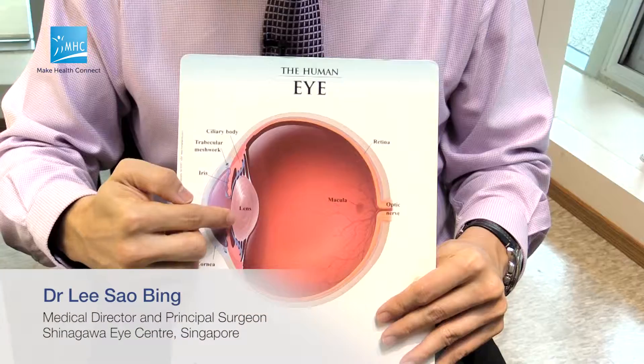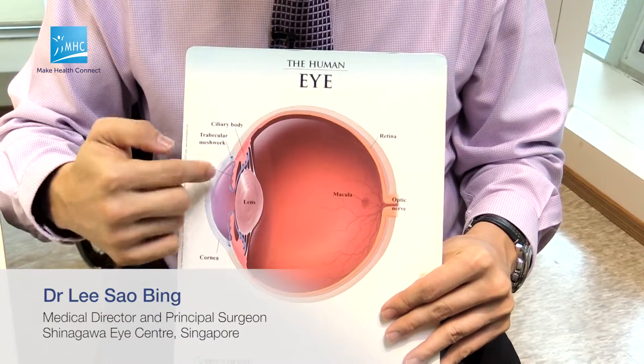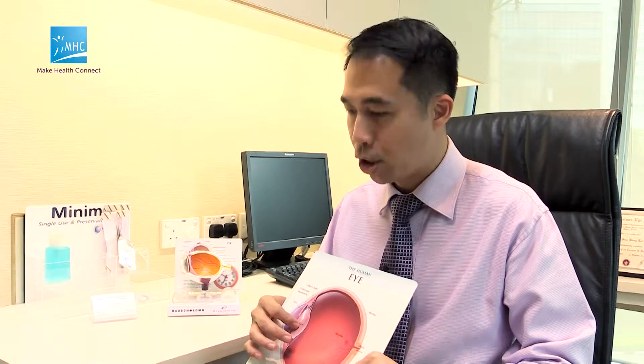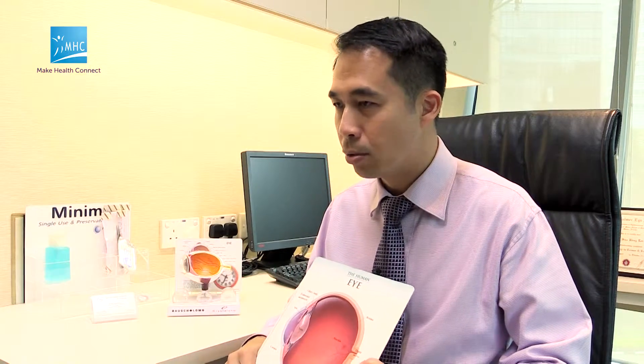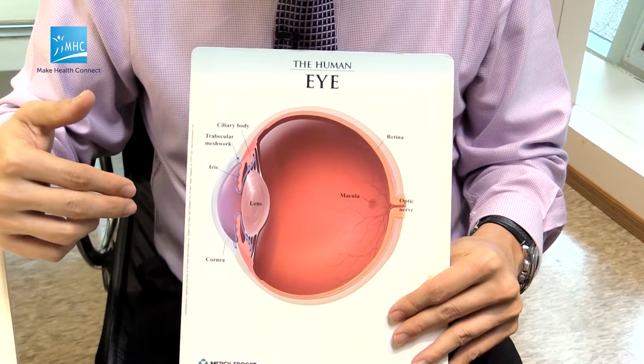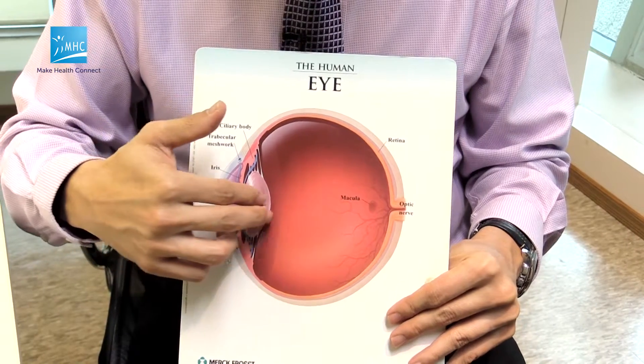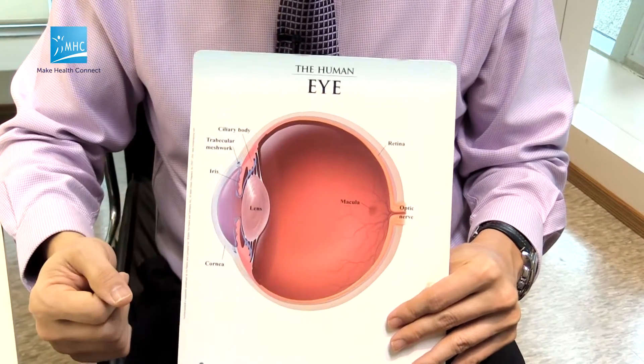Cataract refers to the clouding of the lens of the eye. This is the lens of the eye, and this is the cornea of the eye. The lens gets cloudier as we age, and therefore it can block the light rays from coming in — that's when we have blurry vision from a cataract. When we are young, this lens is very clear, so when light rays come through it, we are able to see well.